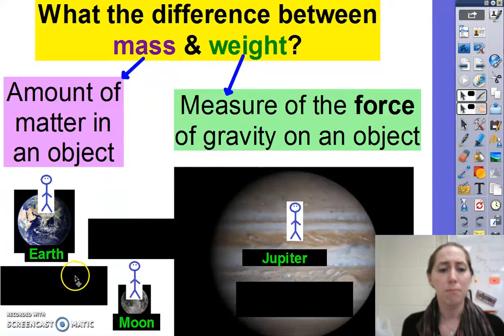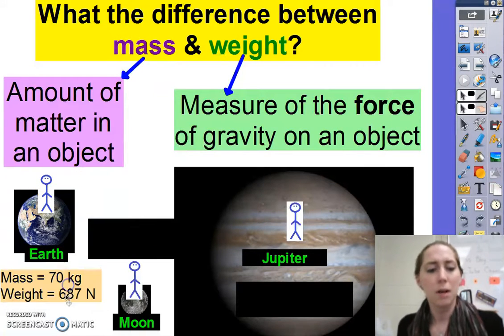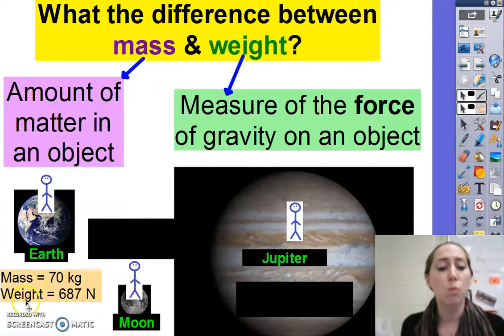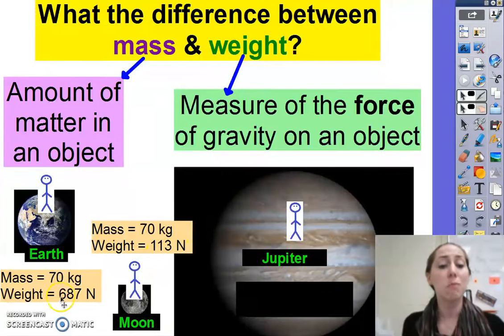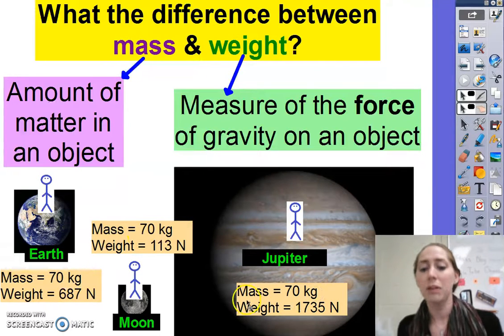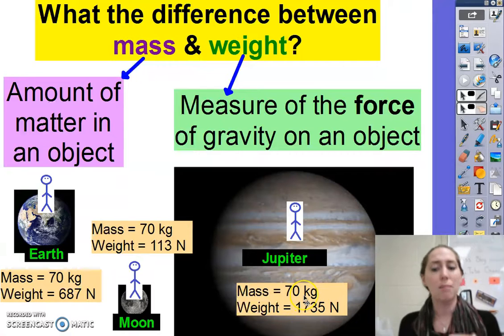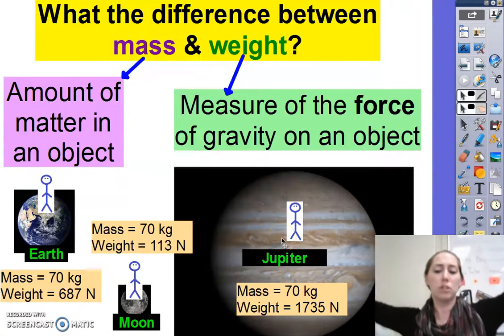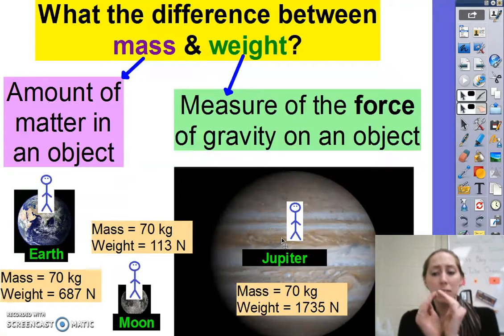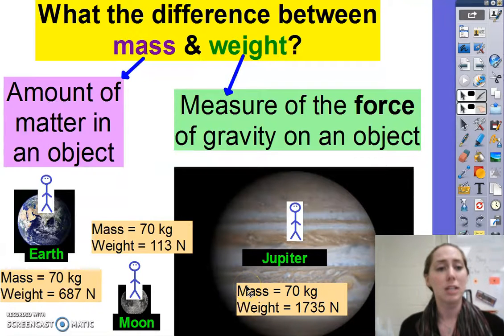Let's pretend I have a teleporter. Standing here on Earth, my mass is 70 kilograms and my weight is 687 newtons. I teleport to the moon — my mass is still 70 kilograms, but my weight is only 113 newtons because the moon has much less gravity than Earth. I teleport again to Jupiter — my mass is still 70 kilograms, but my weight is 1,735 newtons because Jupiter has a much bigger gravity than Earth, and much bigger than the moon's as well. So mass will stay constant; weight will change.